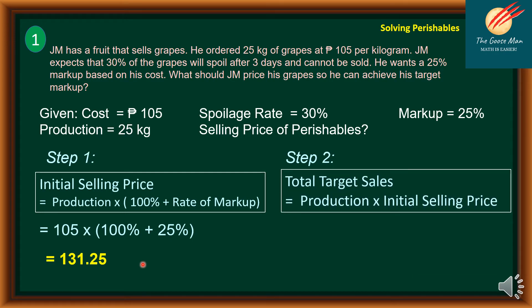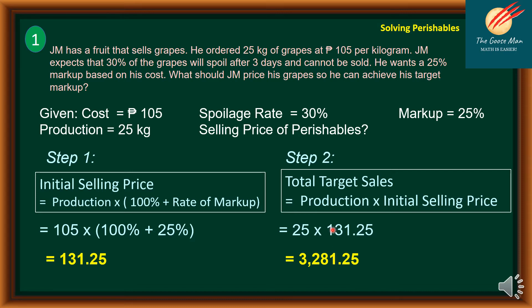Step 2: Get the total target sales. That is production times the initial selling price, assuming you can sell everything. So 25 times 131.25 gives us 3,281.25 pesos. This is your total target sales without spoilage — meaning you can sell all 25 kilograms.